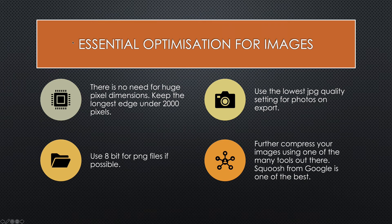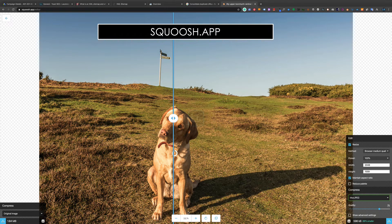Further compress your images using one of the many tools out there. Squoosh from Google is one of the best. When you come out of Photoshop at quality 30, it's been compressed right down because JPEG is a lossy compression method. But Adobe and many image editors don't use very aggressive compression, so there's always more data to be taken out. Squoosh is an online app — on the left is the original file, on the right is the optimized file. I've picked Moz JPEG and got it down to 596 kilobytes from 1.84 megabytes — 68% smaller. That's why you need to compress your images.